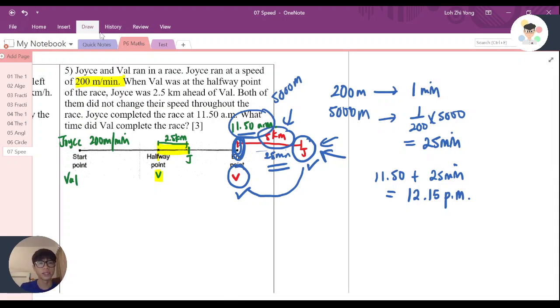Again, what I'm trying to do here is assume that Joyce is continuing to run for 5 km, and at this point it's actually where Valerie reached the endpoint. Why 5 km? Because when Valerie is at the halfway point, Joyce is already 2.5 km ahead. So when you reach the endpoint, it will be doubled, because half of the point means double it. At the end, it's 5 km.